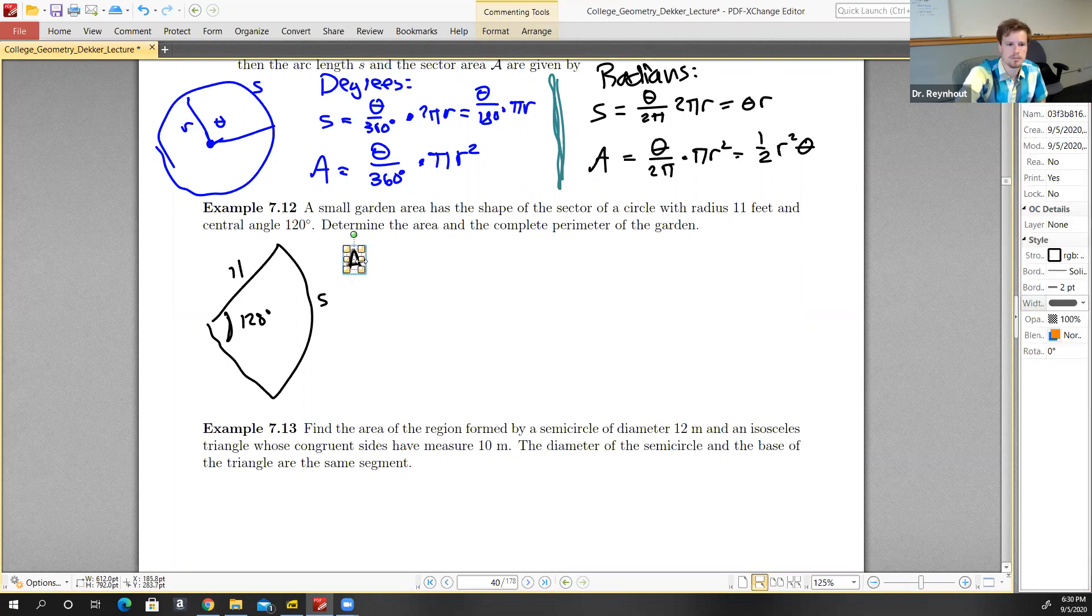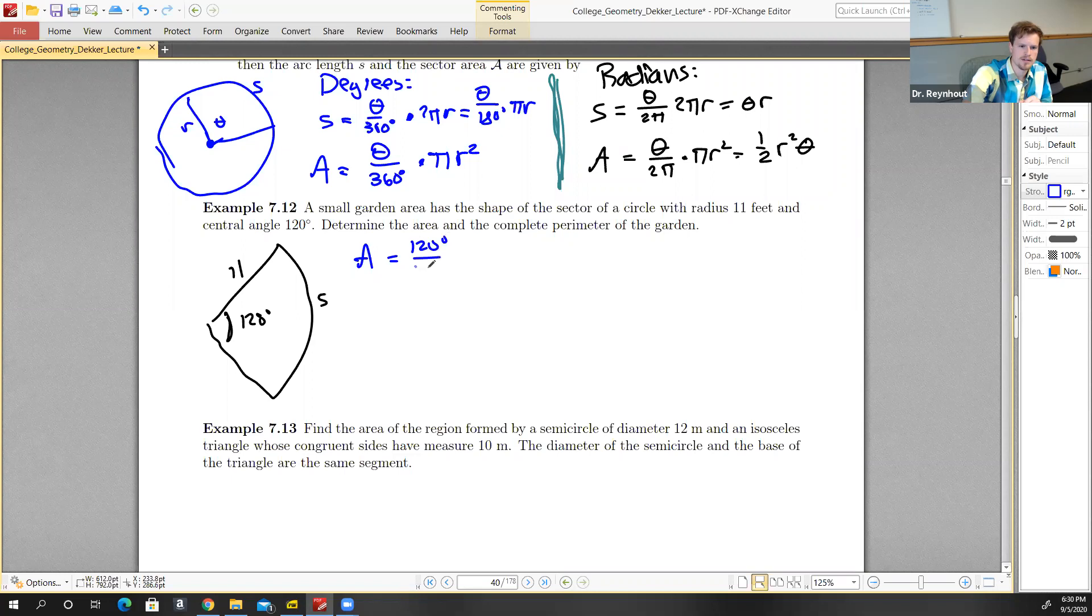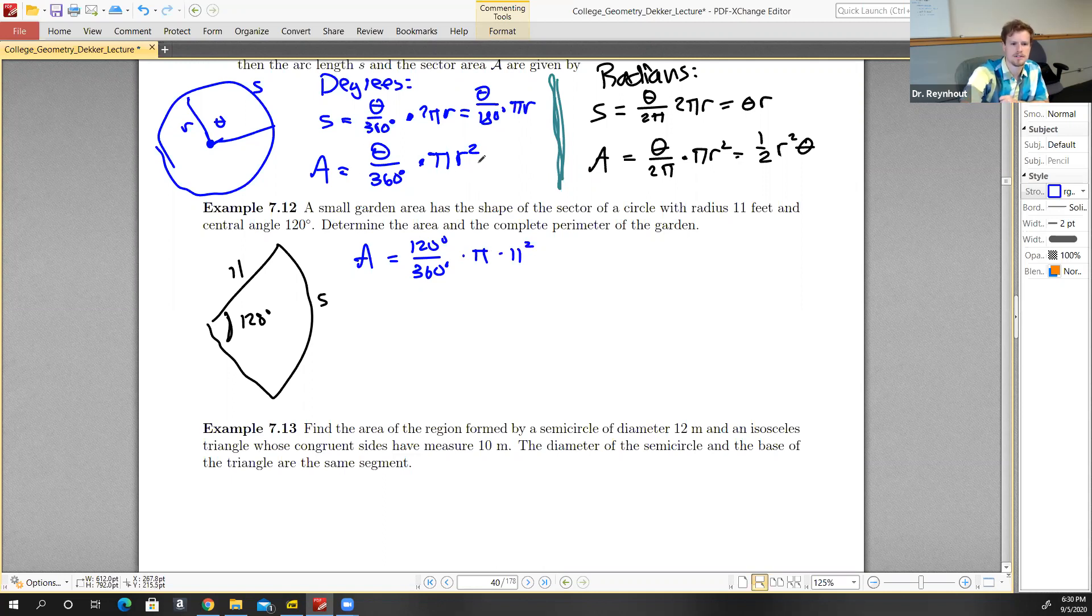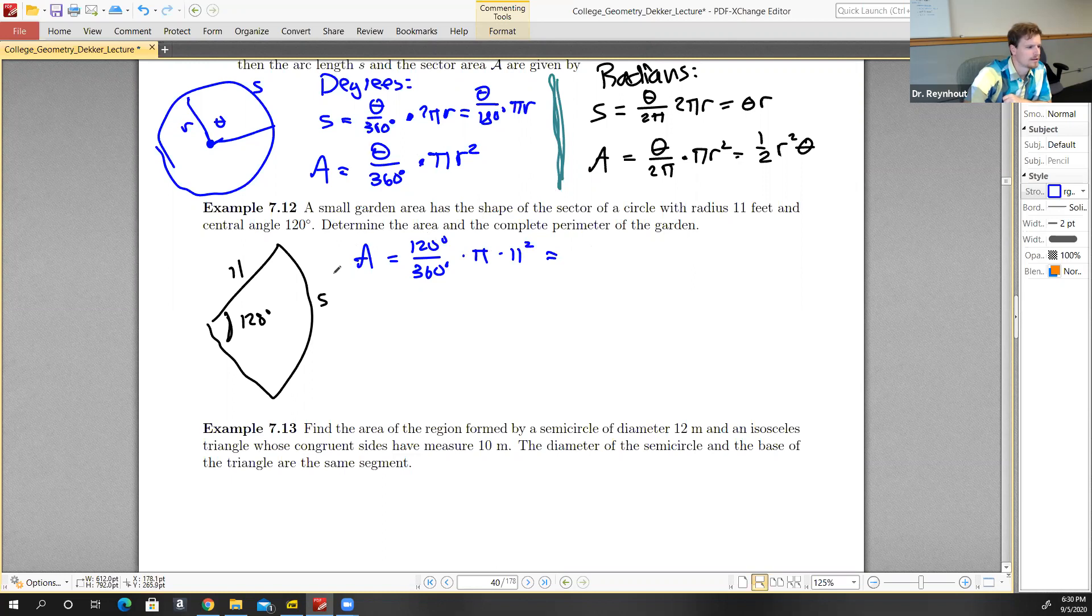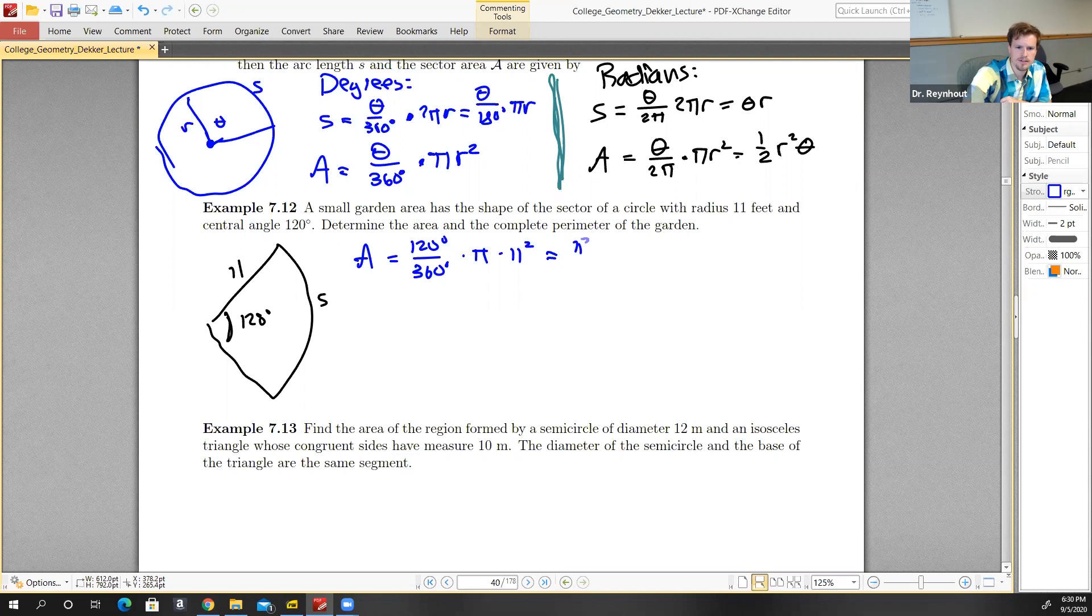The area is given by 120 degrees over 360 degrees times π times the radius squared. This is the formula we're looking at. 120 over 360 reduces to one-third, so that gives us 11 squared over 3 times π, which evaluates to 126.7 square feet.